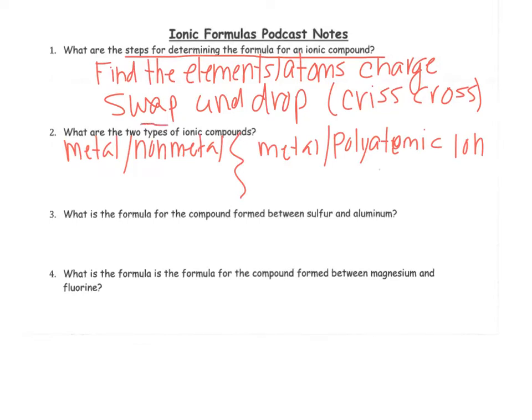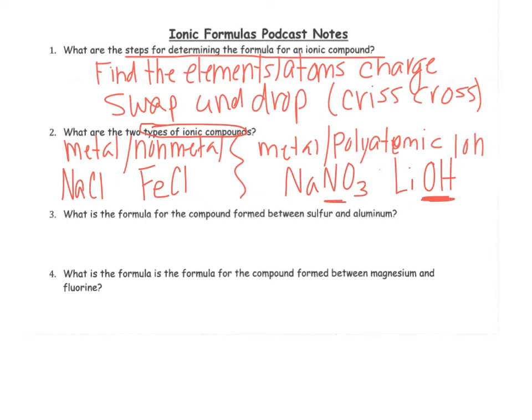There are two main types of ionic compounds. There's metal and non-metal, which is our sodium chloride, iron 2 chloride, and then there's metal and polyatomics like sodium nitrate or lithium hydroxide. These are more molecular. They will also contain non-metal components. And you have a list of these on the back of your periodic table. Now it's time to use it. That's your polyatomic ion sheet.